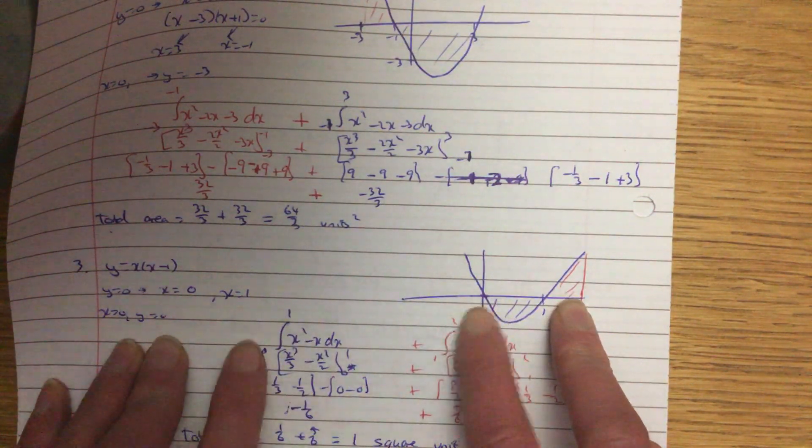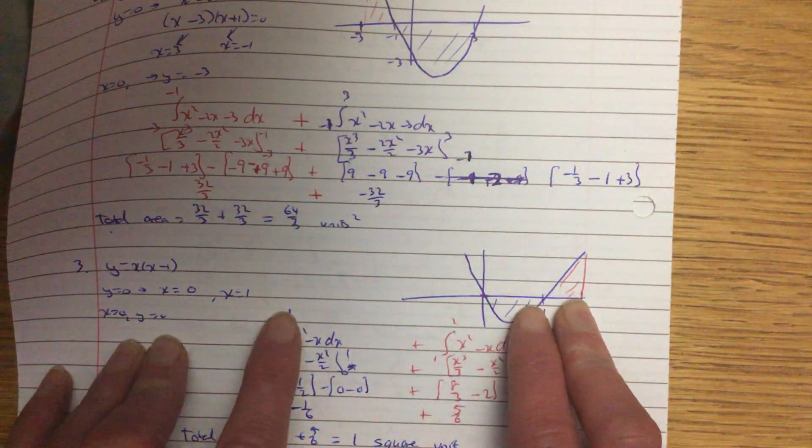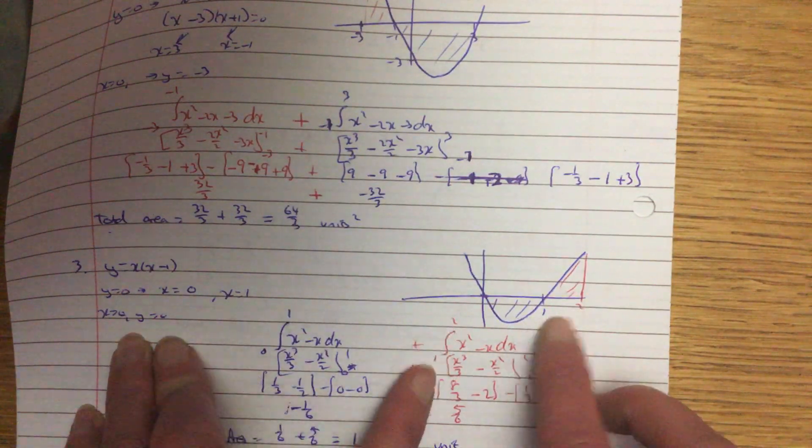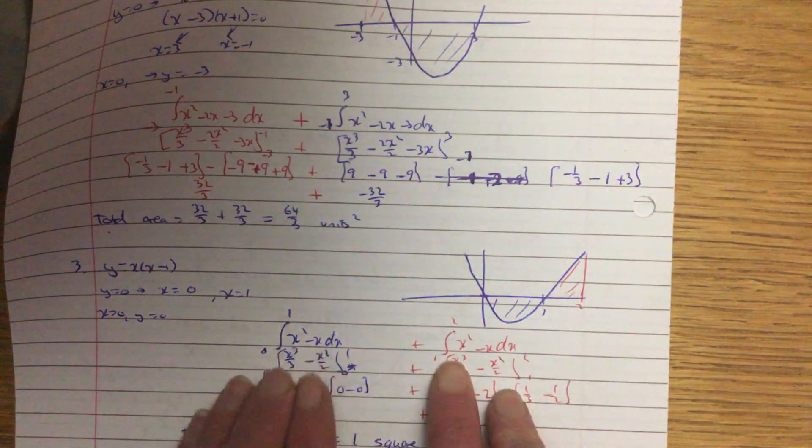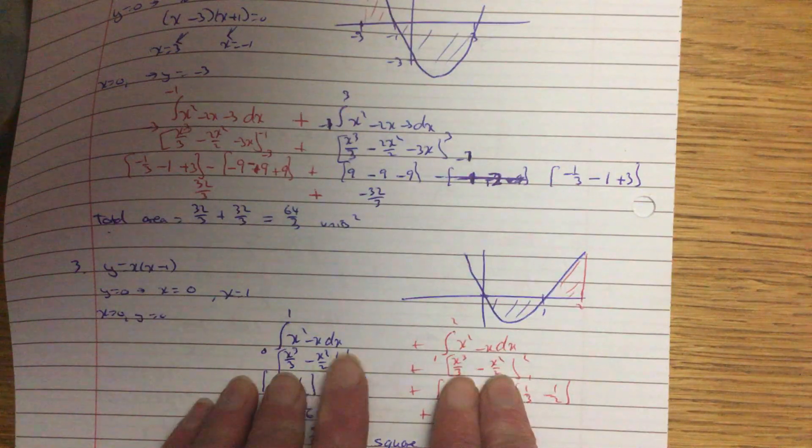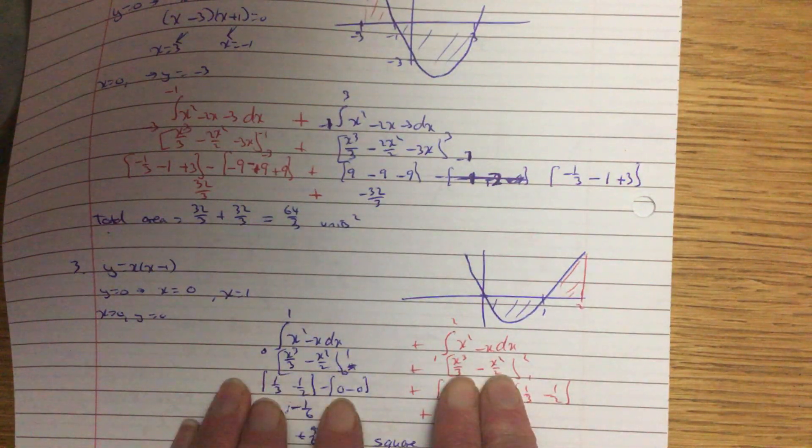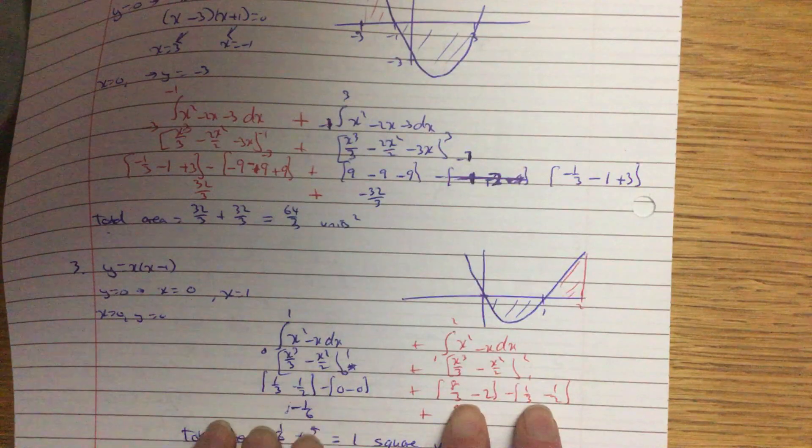This one is running from 0 to 1. So look there, 0 to 1. This one is running from 1 to 2. Integrate, put in the upper value, take away, put in the lower. Put in the upper value, take away, put in the lower.